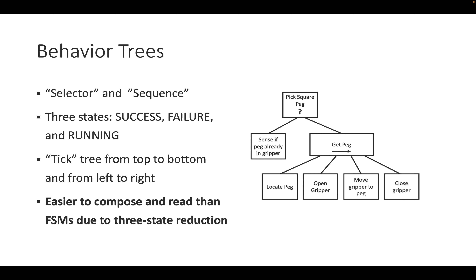The big advantage of behavior trees is that you have to formulate each action as having a bimodal outcome — they can either succeed or fail, and in the middle they are running. This makes them much easier to compose into more complex scenarios because other people do not have to think about the thresholds or state transitions you would put in a finite state machine. In a behavior tree you know that each node will either succeed or not, which forces you to think about your behaviors in a certain way.